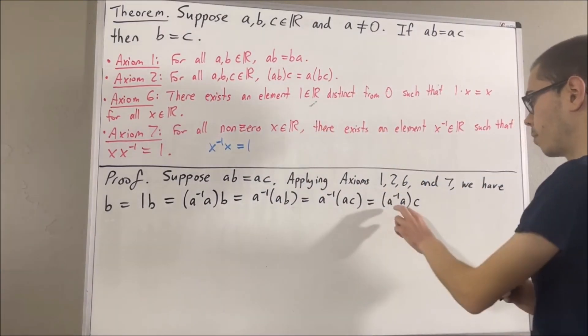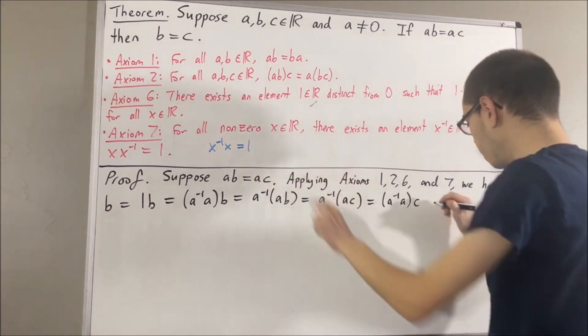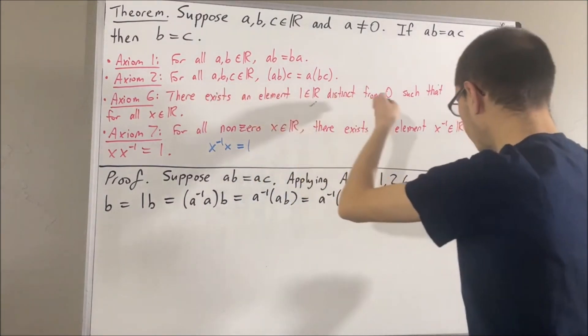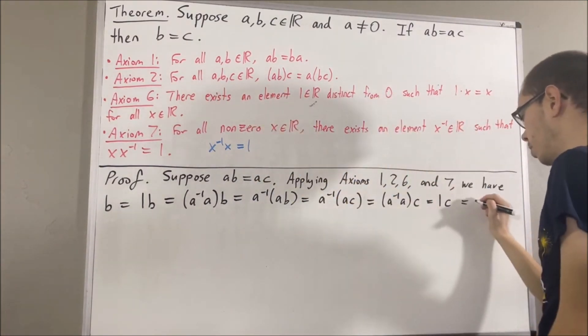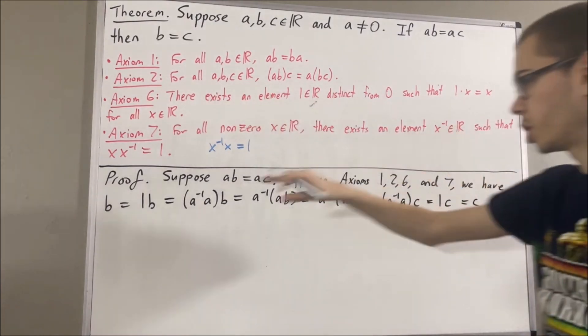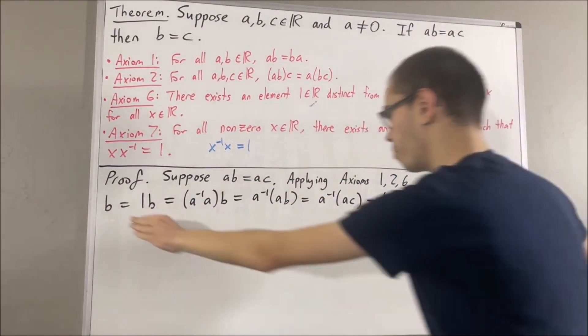But then, the reciprocal of A times A is equal to 1. Then, by axiom 6, 1 times C is equal to C. So, through this chain of equalities, we have shown that B is equal to C.